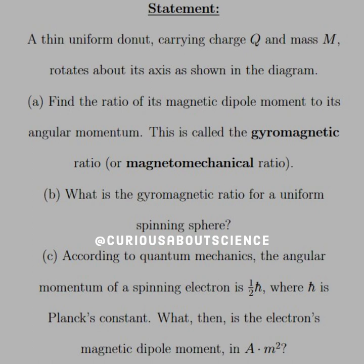Part C: According to quantum mechanics, the angular momentum of a spinning electron is one-half h-bar, where h-bar is Planck's constant. What, then, is the electron's magnetic dipole moment in terms of A·m²?